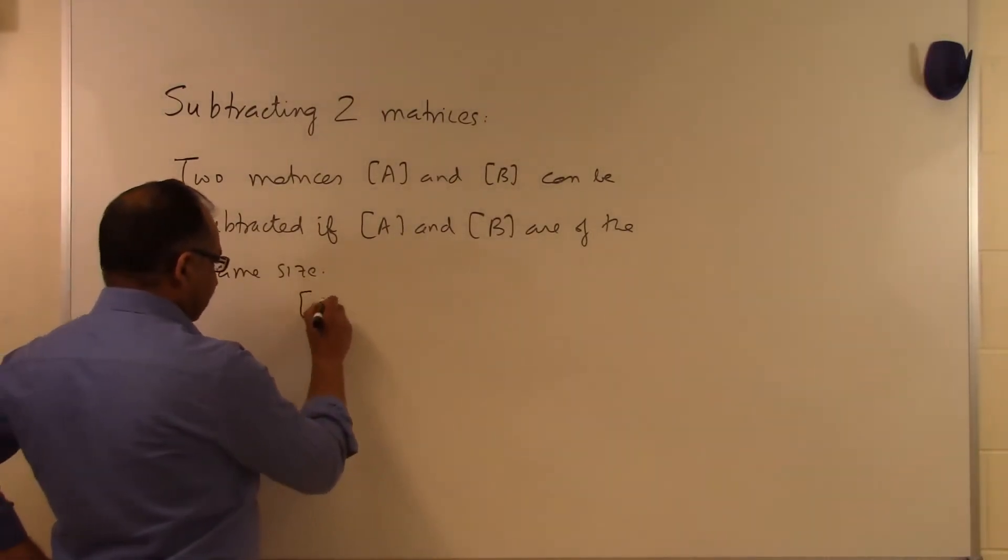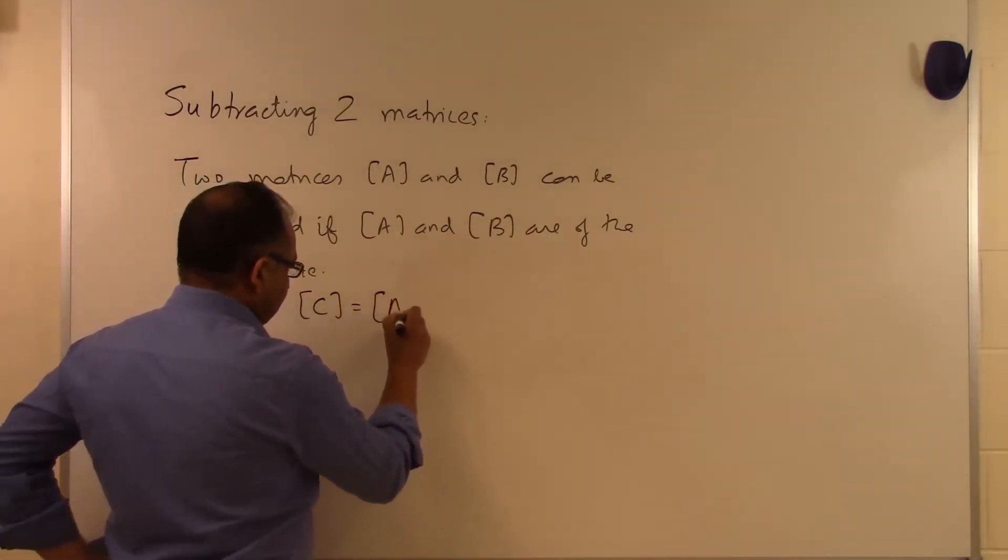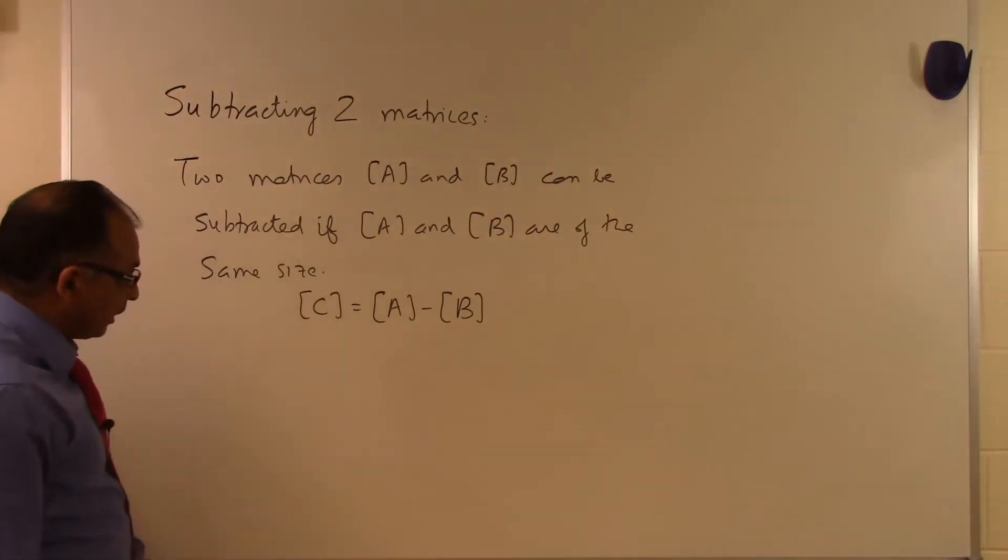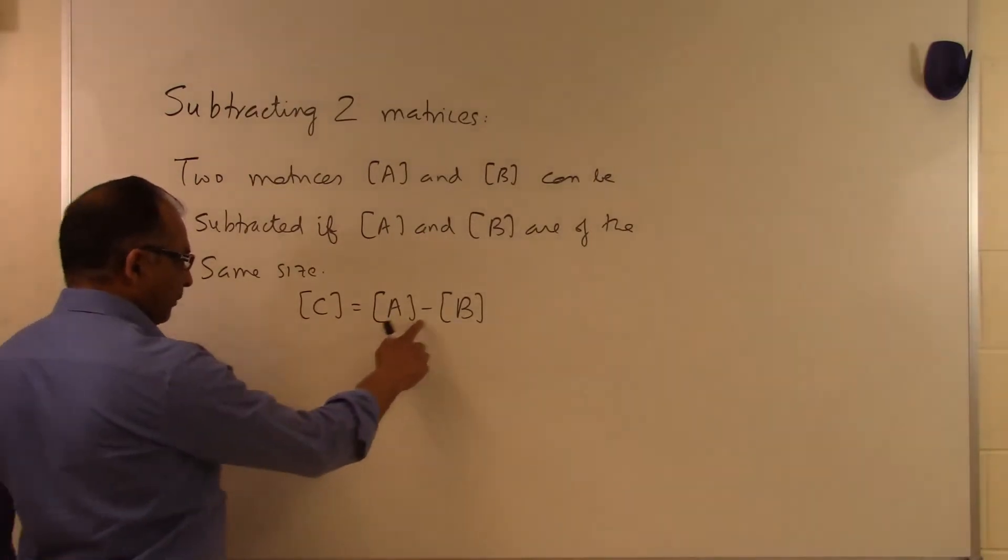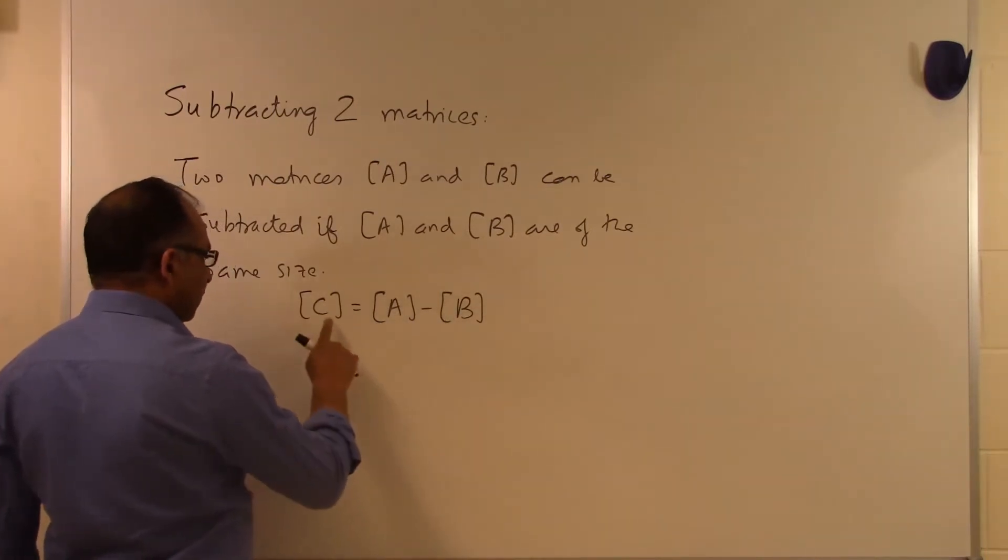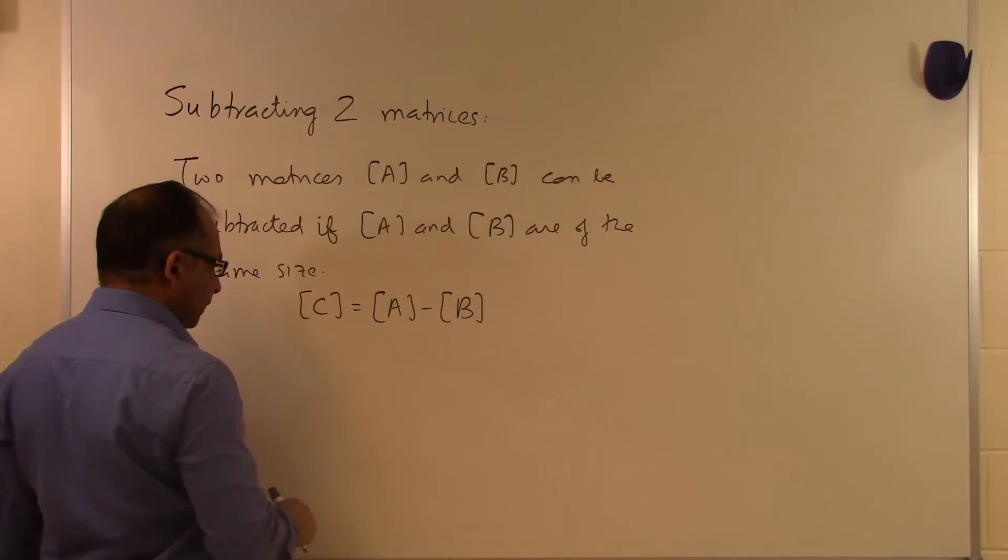And so the subtraction will be defined by take the matrix A and subtract B from it, or it could be defined by subtracting A from B. So let's stick with A minus B. The number of rows has to be the same as the number of rows here, the number of columns has to be the same as the number of columns here, and it will turn out to be the same size as A or B.